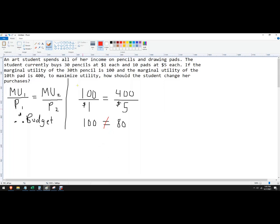I need to know how to get closer to being equal. How should the student change her purchases? So all I can do is change this. If I increase my quantity of pencils, marginal utility is going to decrease.